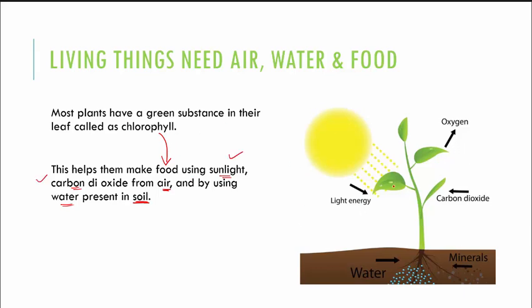If you can see the picture here, in the air it is getting carbon dioxide and sunlight. Through soil it's getting minerals and water, and then this green thing — which is chlorophyll — is preparing the food and releasing oxygen.